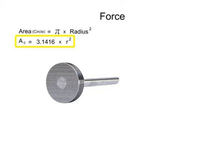By substituting the appropriate values for pi and diameter, we can simplify this equation to area equals 0.7854 times diameter squared.